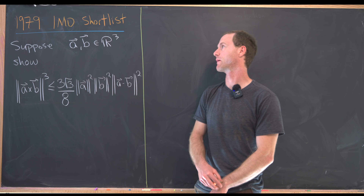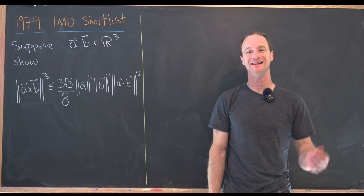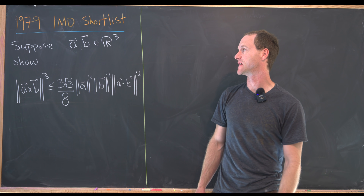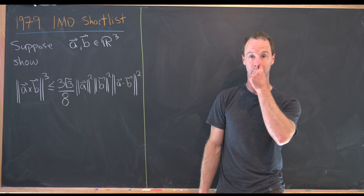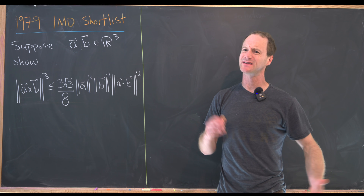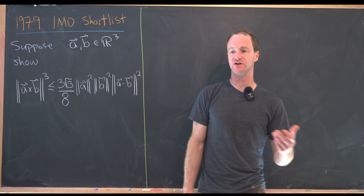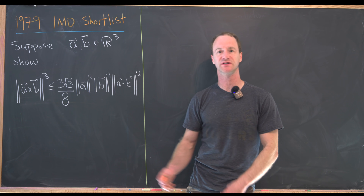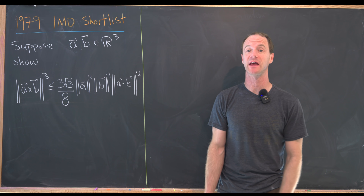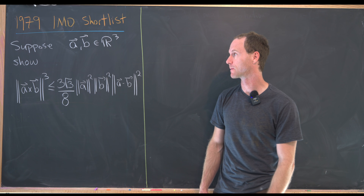Today I've got this nice problem that was shortlisted for the 1979 International Math Olympiad. It's got a nice combination of geometry with vectors, and we'll see some calculus in the solution as well.